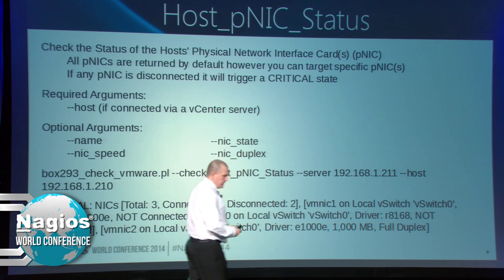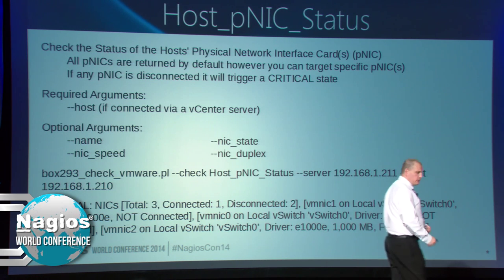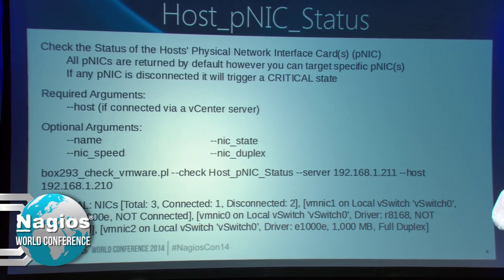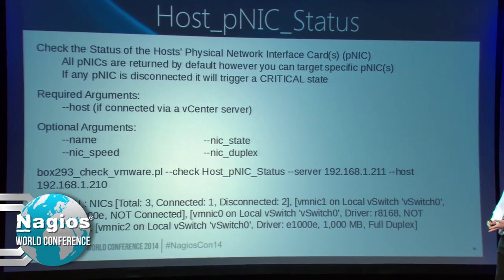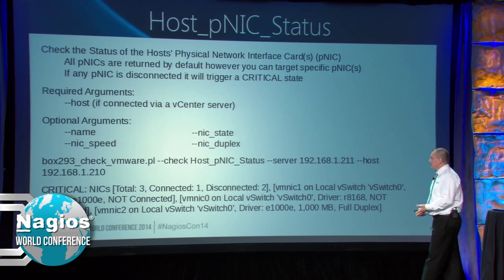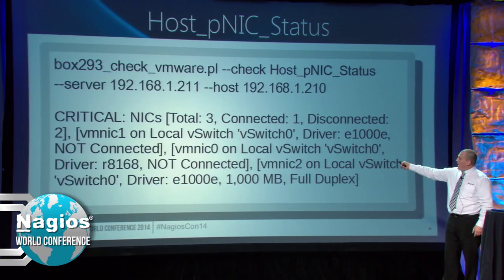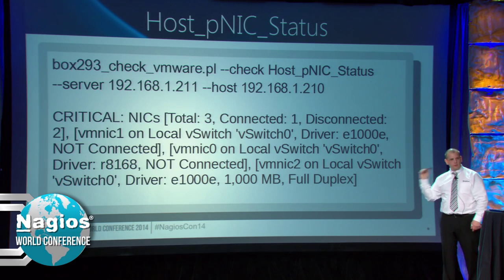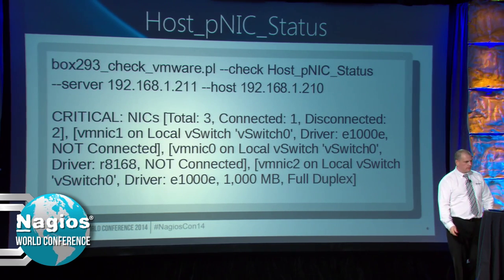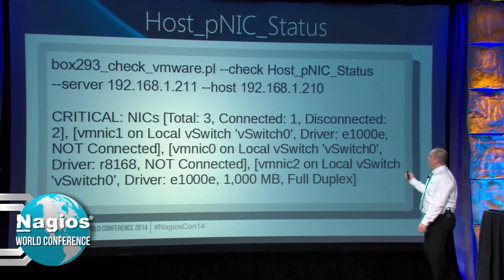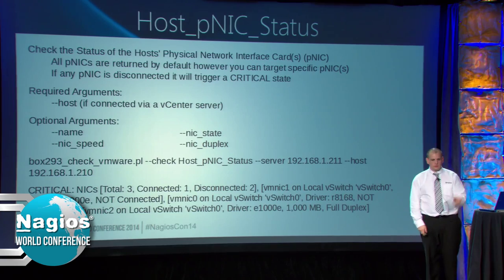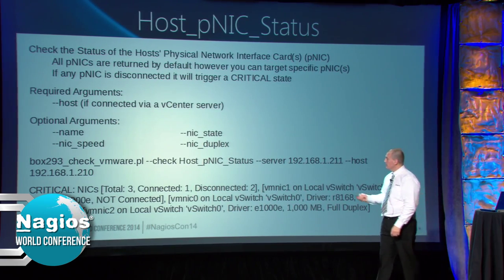Host PNIC status - PNIC being a physical NIC. By default this check will gather all the NICs on the host and give you the status, including the speed and duplex state. It will trigger on state - if it's disconnected, it will trigger an alarm. In this case I have three total, but only one is connected and two are disconnected. It goes into the details about each one and tells me which ones are actually disconnected, and also tells me the speed and duplex. You can use the name argument to specify a single NIC or a combination like VMNIC0, VMNIC1, and so forth.